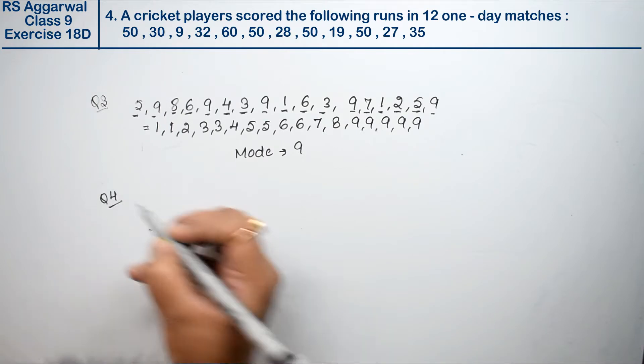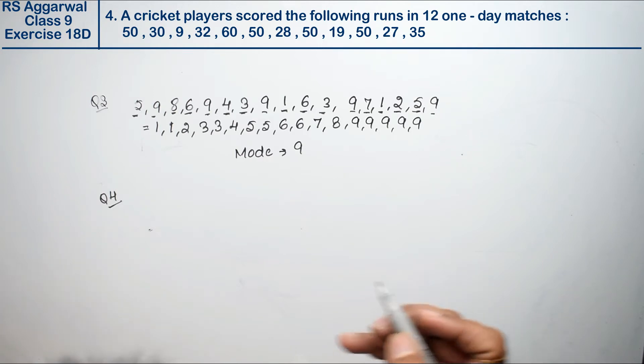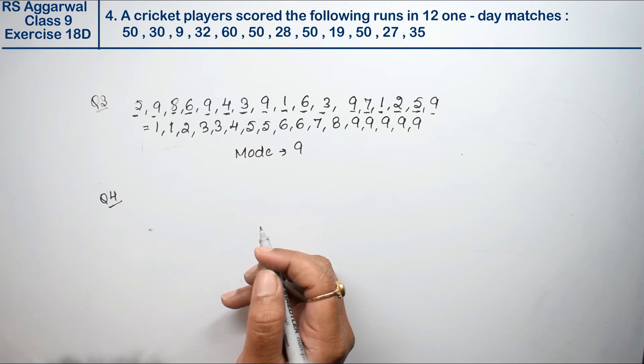Let's do question number 4 of exercise 18D - mean, median, and mode of ungrouped data. Question 4: A cricket player scored the following runs in 12 one-day matches. The cricket player scored runs in 12 one-day matches, and we will find out the modal score.